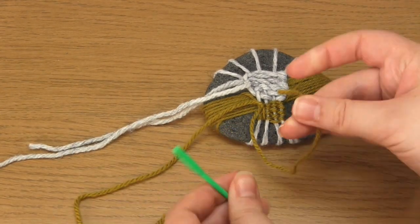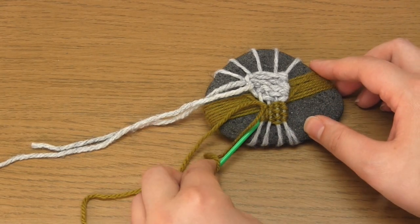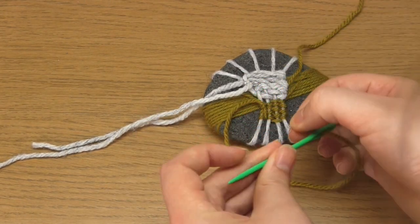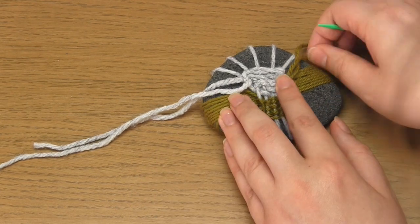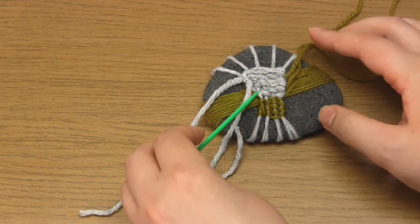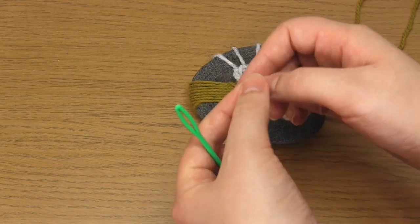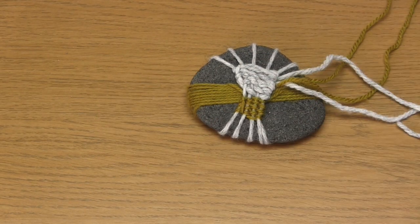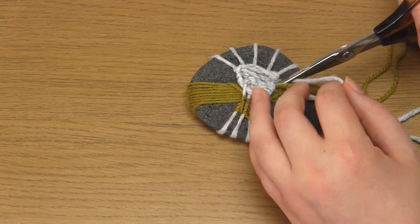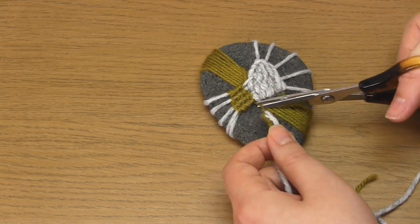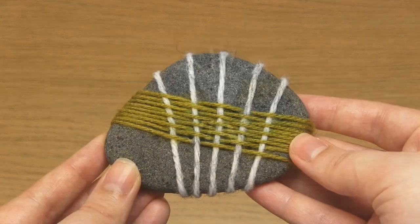Then all that's left to do is use the yarn needle to feed each of the four yarn ends under the woven areas to hide them. Like so. And cut off the excess yarn. Taking the time to hide the yarn ends really makes it look a lot neater.